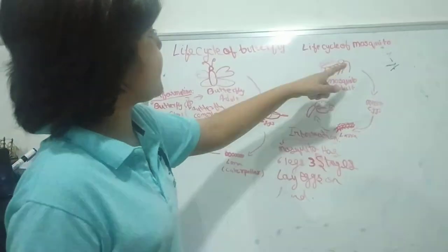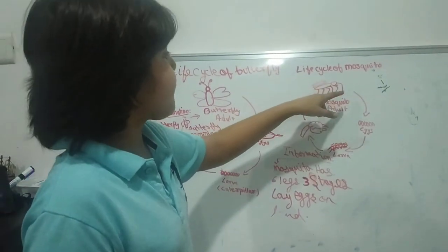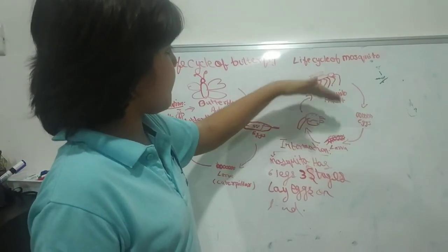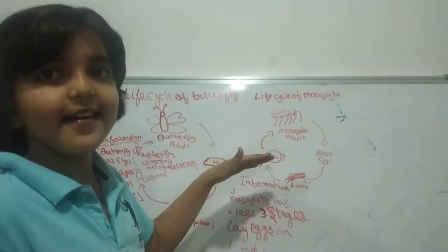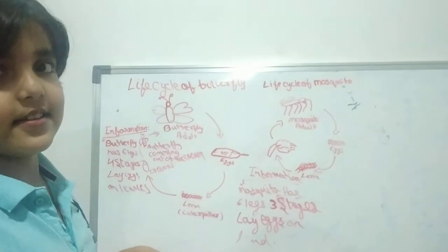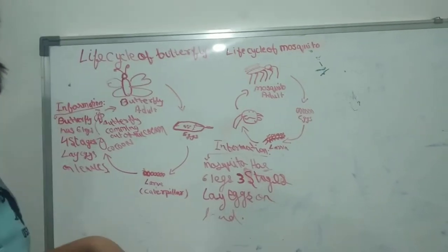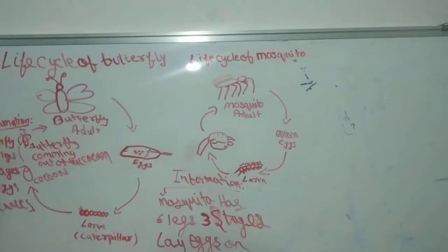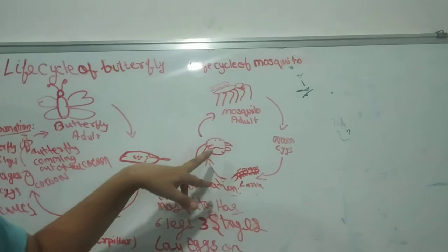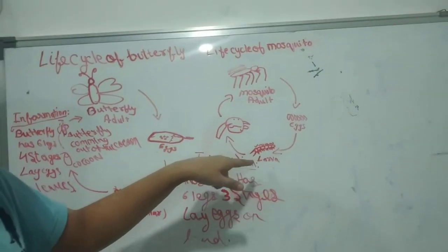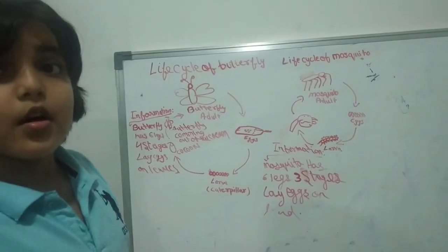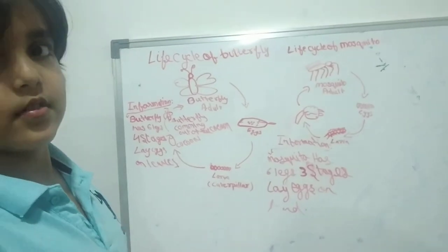Then it repeats itself. You mean to say the cycle will repeat, once you are saying that one mosquito lays eggs, that is the eggs, then larva, and then cocoon. So it will convert into the adult stage, then again the life cycle goes on.